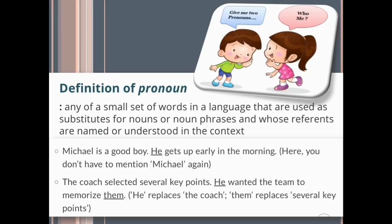Here, you don't have to mention Michael again. In this example, we have two sentences and both are related to one boy. The first time we mentioned the name of the boy, and in the second sentence we used a pronoun suitable for that boy. Next example: the coach selected several key points. He wanted the team to memorize them. He replaces coach and them replaces several key points. There is no need to use coach again — he and them are pronouns.